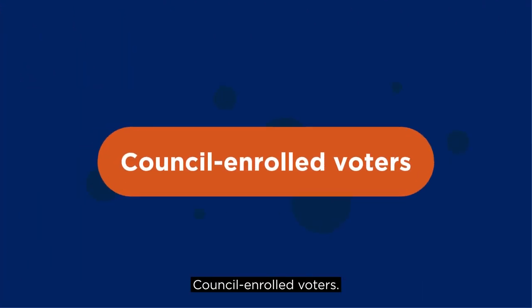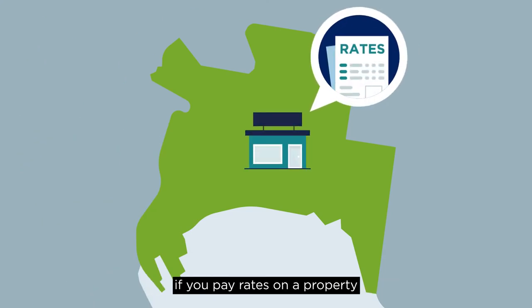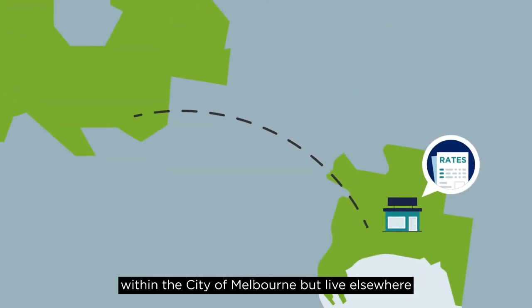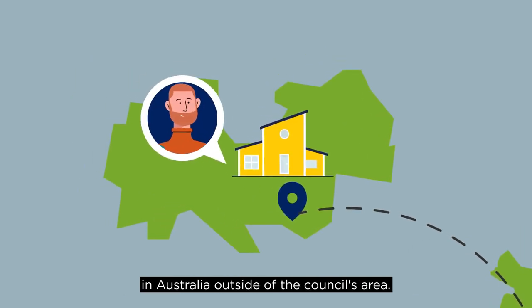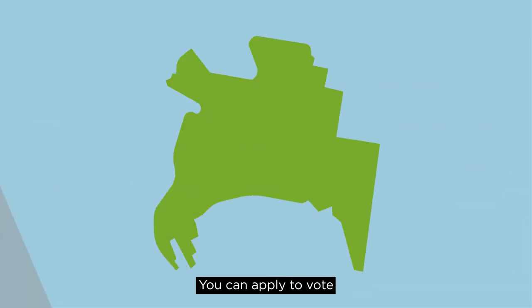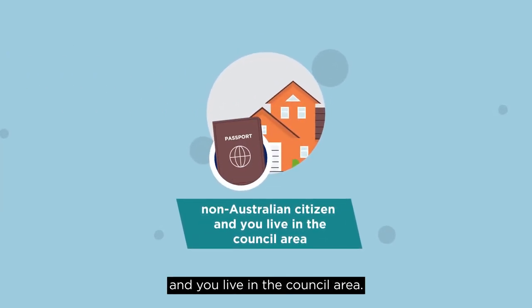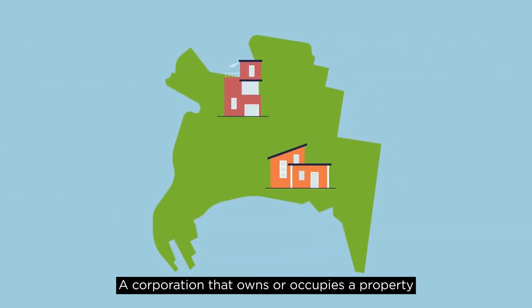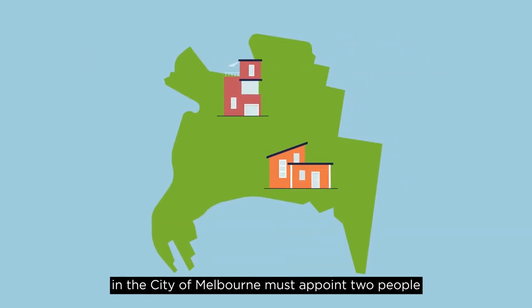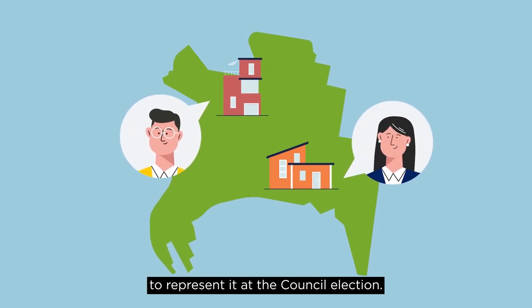Council enrolled voters: You will be automatically enrolled by council if you pay rates on a property within the City of Melbourne but live elsewhere in Australia outside of the council's area. You can apply to vote in the Melbourne City Council elections if you are a non-Australian citizen and you live in the council area. A corporation that owns or occupies a property in the City of Melbourne must appoint two people to represent it at the council election.